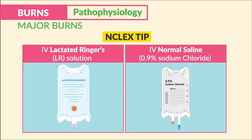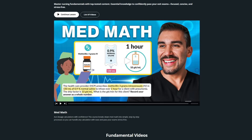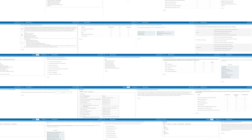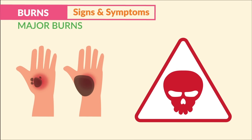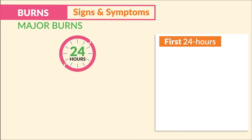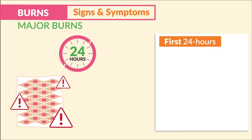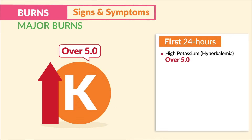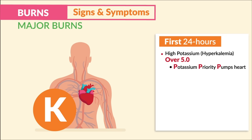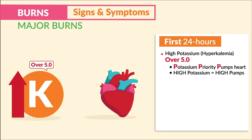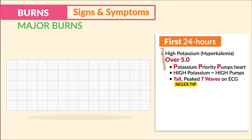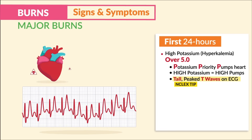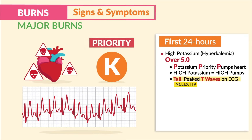In the first 24 hours, as cells burst and cellular damage occurs, cells release potassium into the bloodstream causing high potassium — hyperkalemia over 5.0. Potassium is priority since it pumps the heart muscles. With high potassium, we have high pumps of the heart, leading to tall peaked T waves on the ECG monitor — a huge NCLEX tip. This could lead to deadly cardiac dysrhythmias, making potassium always the number one priority.